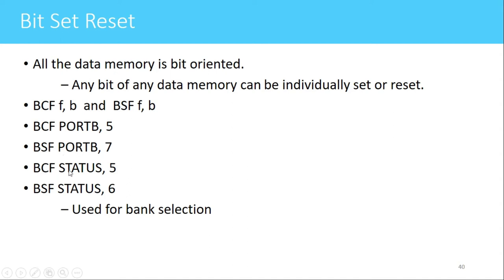BCF STATUS,5 clears bit 5 of the STATUS register, and BSF STATUS,6 sets bit 6 of the STATUS register. These instructions are used for bank selection. Since there are four different banks, to select one we set specific values to bits 5 and 6 of the STATUS register.